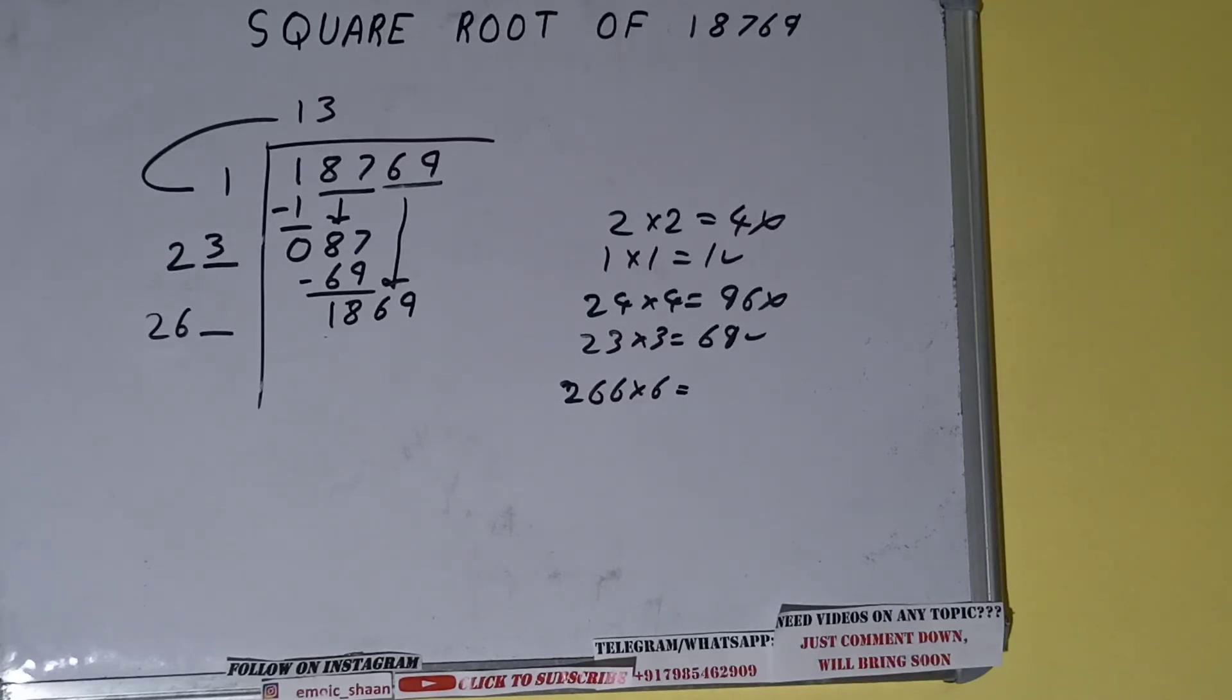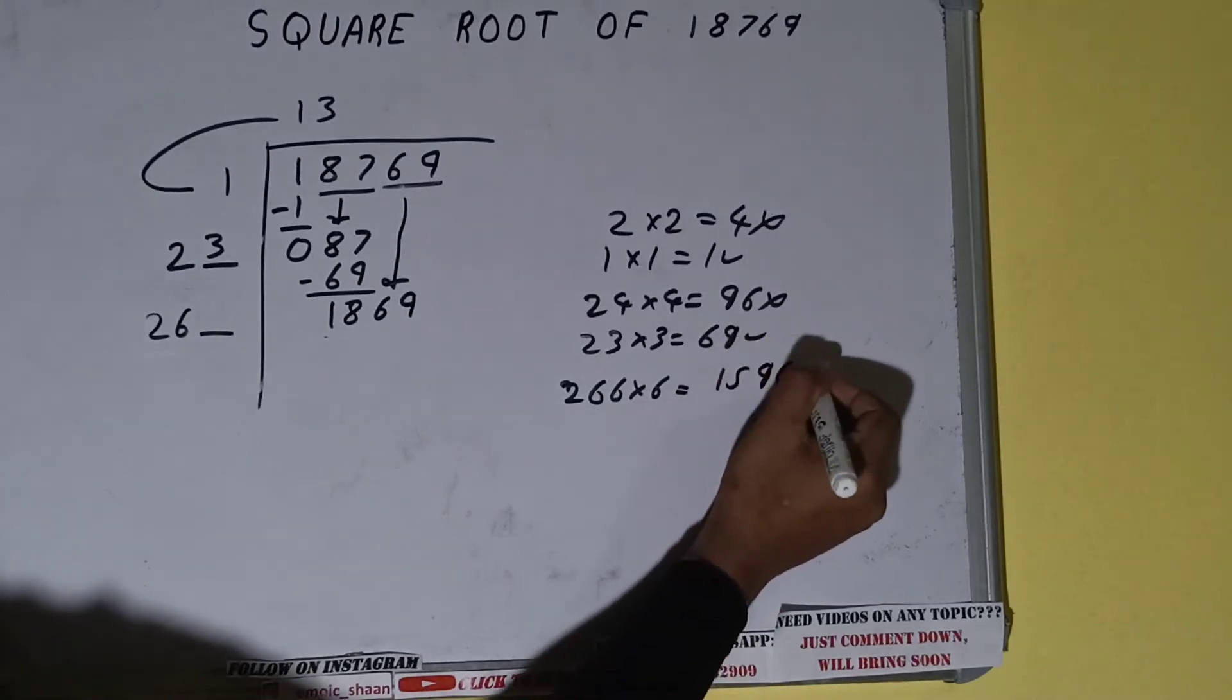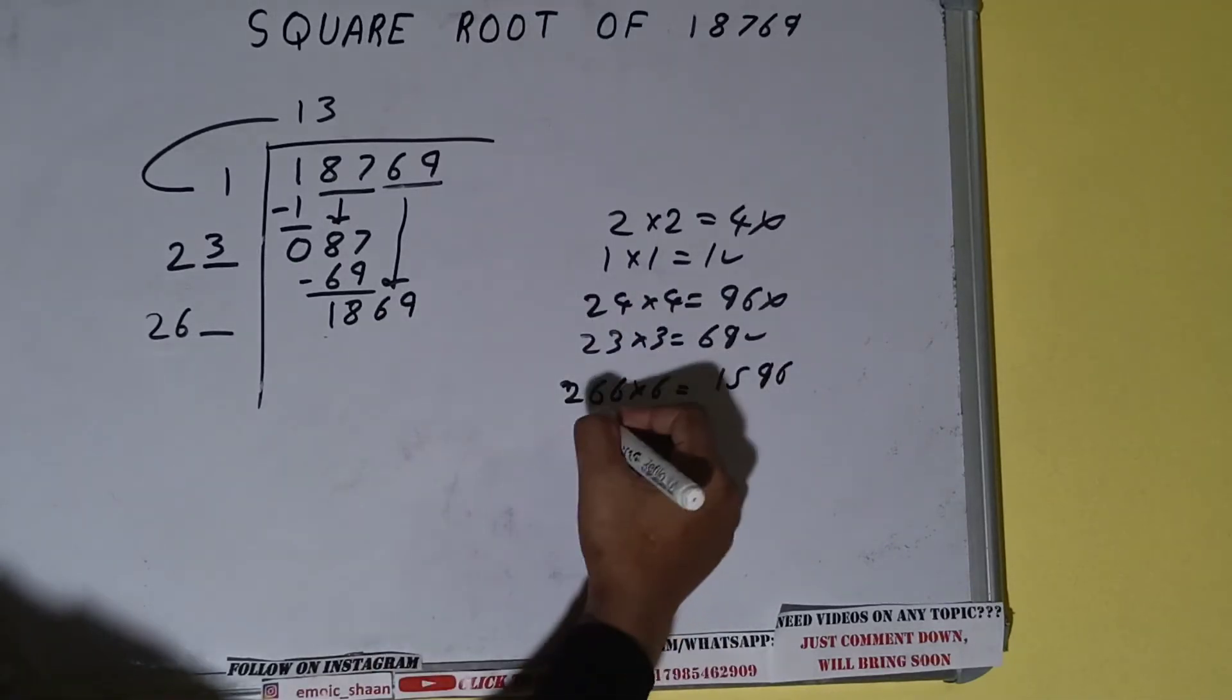It will be 1596, which is too small. Let's try 7 times also once. So 267 into 7 will be 1869, which is good to take.